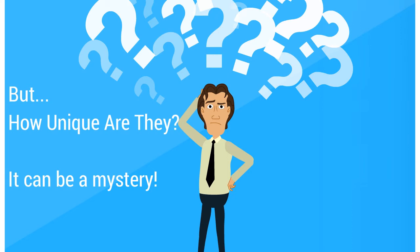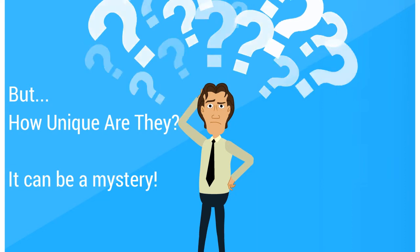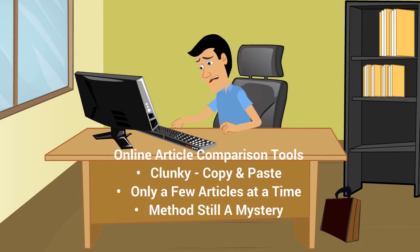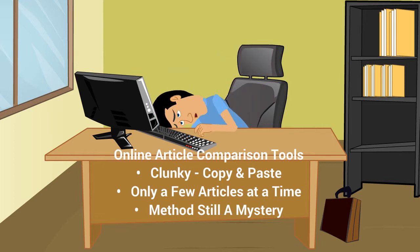With some of them it remains a mystery. Others will just give you an average indicating how different the spun articles are from the original. But if you want to find out how unique each article is from other articles in the group, what can you do? There are a few online tools that will help, but you have to copy and paste in the content of each article, you can only compare a few articles at a time, and you still don't know how they are actually doing the comparisons.